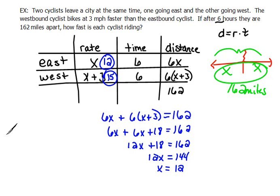Now we need to double check that we answered the question. The question asked how fast is each cyclist riding? That would be 12 miles per hour for the eastbound and 15 miles per hour for the westbound.